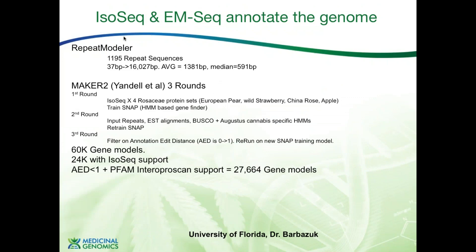Here's the workflow: we ran RepeatModeler first to identify repeats in the genome — we now have good resolution on 16 KB repeat structures based on PacBio read length. Once you understand where the repeats are, you feed that into Maker and go through several rounds of training on the genome with messenger RNA transcripts, coming out with strong gene models. You then filter those based on things that have support from IsoSeq, leading us to around 27,000 genes.